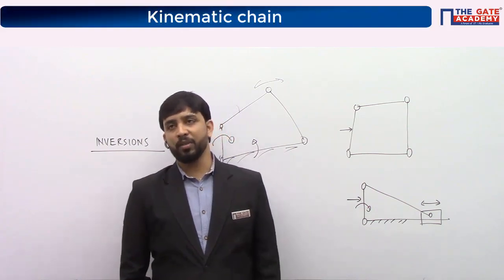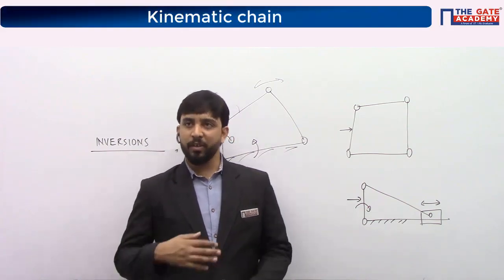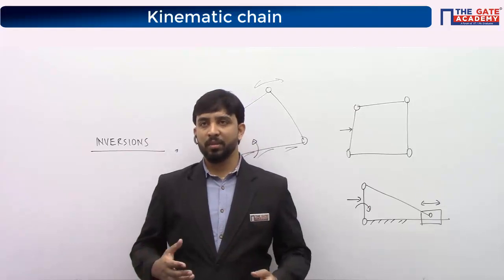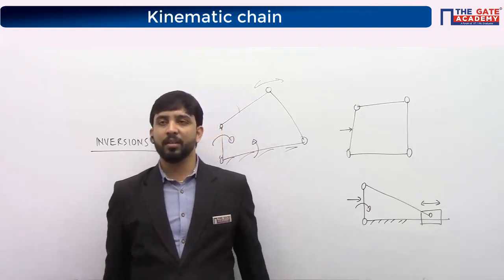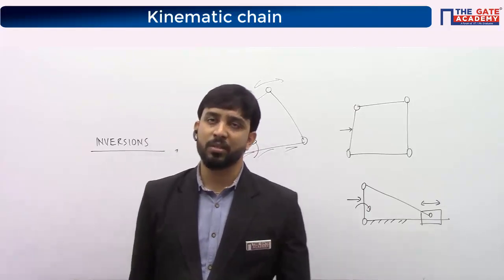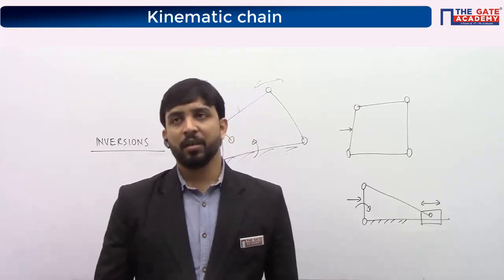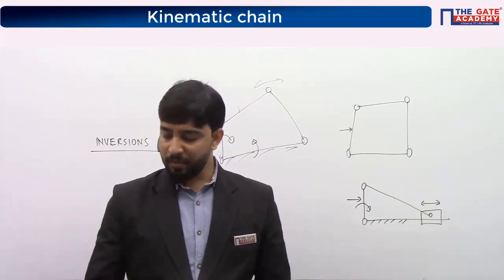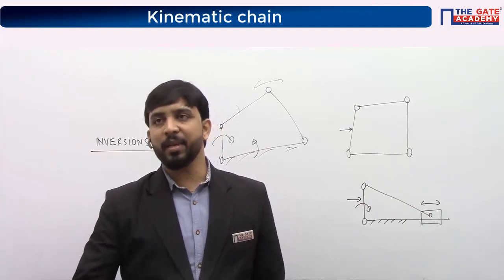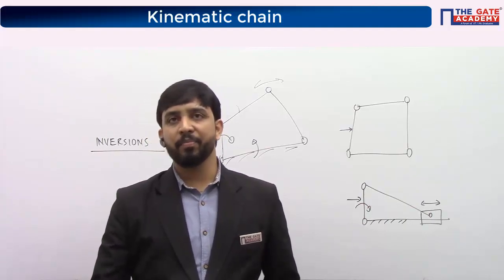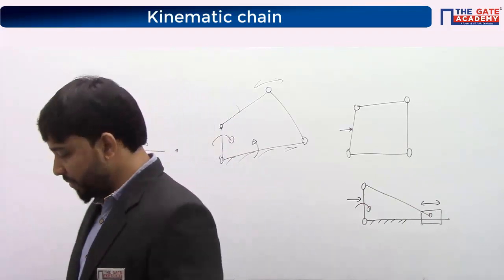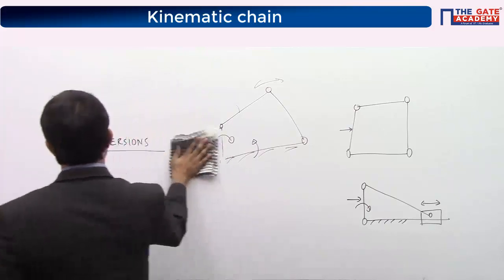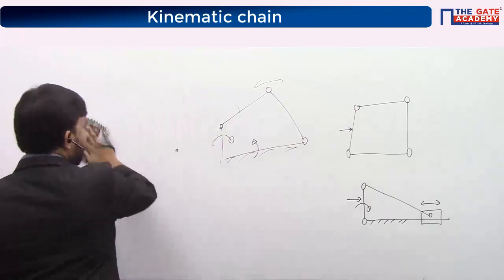We will be having n number of inversions. By fixing each link we will get one mechanism, so those are nothing but inversions. Write a note like this: if there are n links in a mechanism, the number of inversions possible are n.